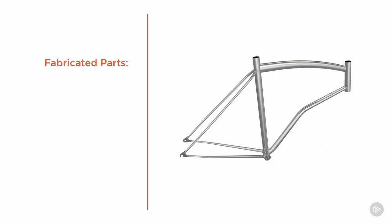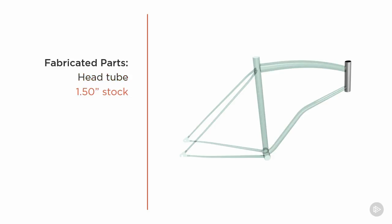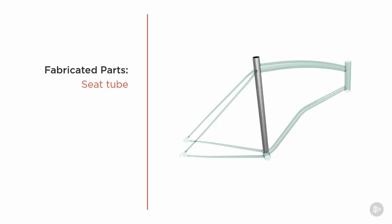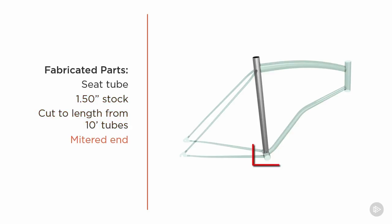For the fabricated parts, we'll create the head tube, which will be made from 1½-inch aluminum tubing, and the bottom bracket, which will be made from 1¾-inch aluminum tubing. Both parts will be cut from tube stock that comes in 10-foot-length pieces, and after the cutting operation, they will need to be deburred before they're ready for the welding operation. The seat tube will have a similar process made from 1½-inch stock and cut from 10-foot-long tube stock, but one end will need to be mitered so it fits properly on the bottom bracket. After that, it will also get deburred before it's ready for the welding station.